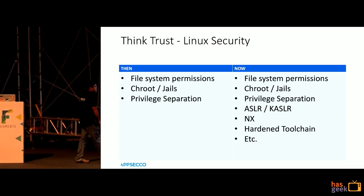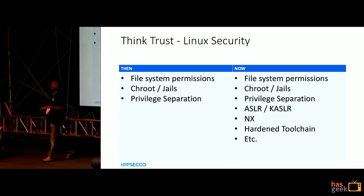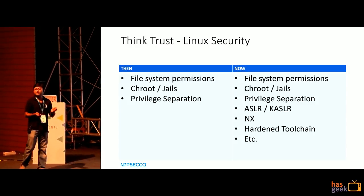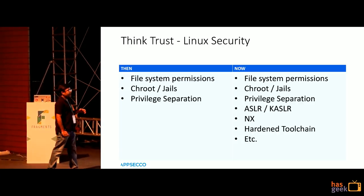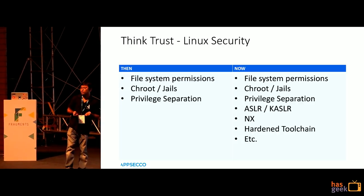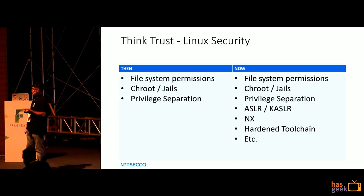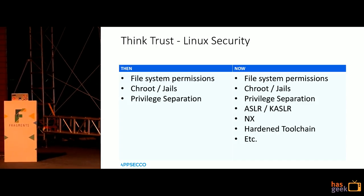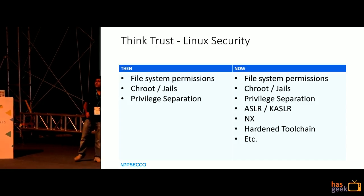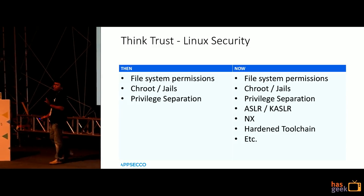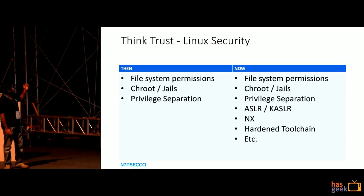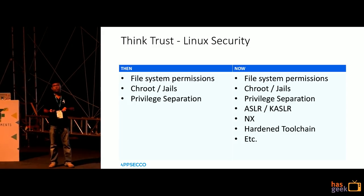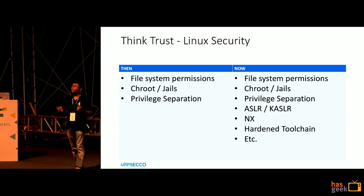If you think about trust - how applications or software components have been secured over time - trust is created through controls or mitigations. From a fundamental point of view, the Linux kernel has always implemented file system permissions. This simple control allows you to use this feature for a whole lot of security use cases.